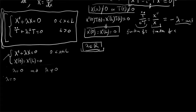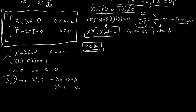If lambda equals 0, the equation becomes X double prime equals 0, so X equals alpha times x plus beta. The boundary condition X prime equals 0 forces alpha equals 0, so X must be a constant. The solution forms a one-dimensional space spanned by X equal to 1. So if lambda equals 0, we take X equal to 1.